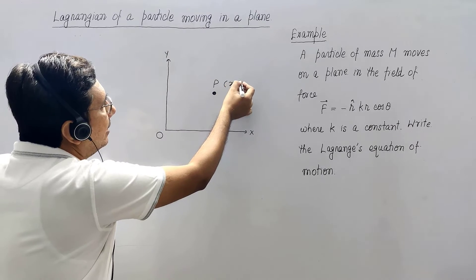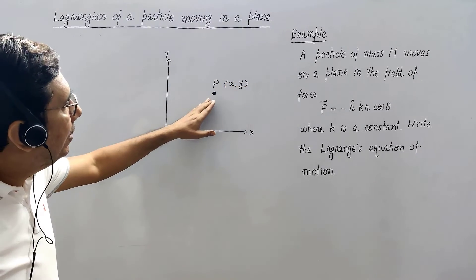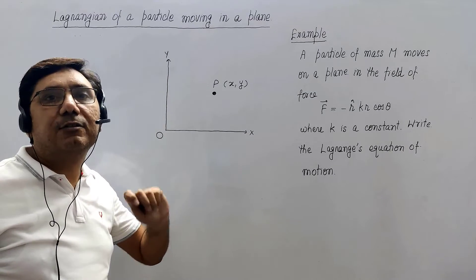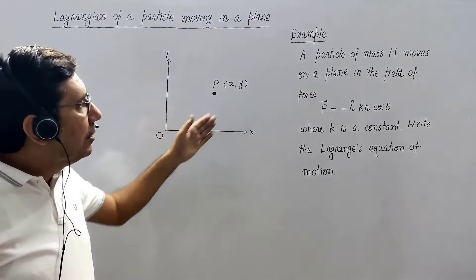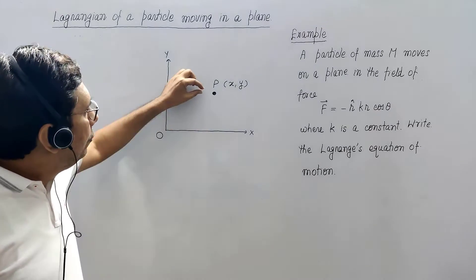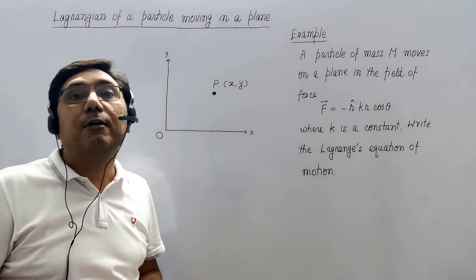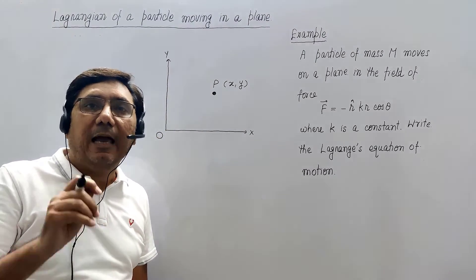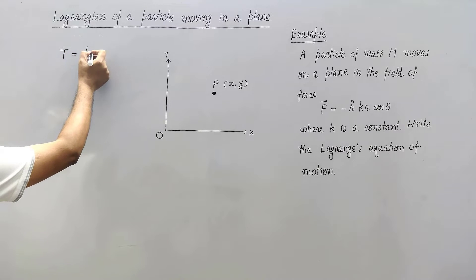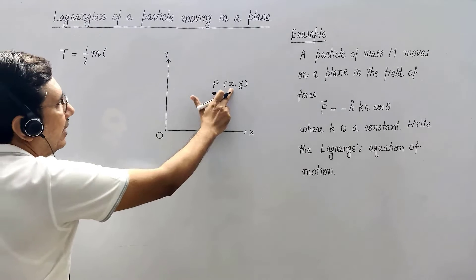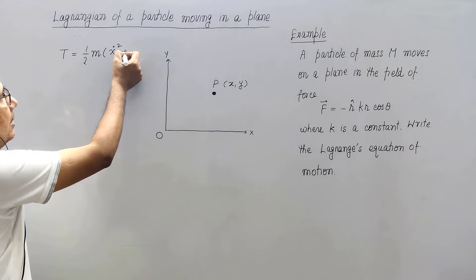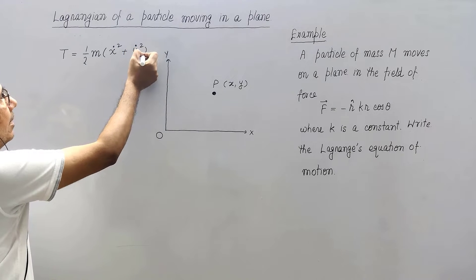If you consider the coordinates of this particle as x and y, then the velocity components are x-dot and y-dot. When this particle moves, x and y are going to change with time, so velocity components will be x-dot and y-dot. The kinetic energy in this case will be 1/2 m times (x-dot squared plus y-dot squared).